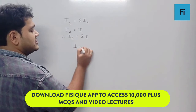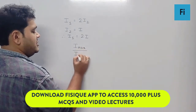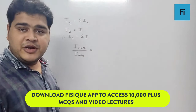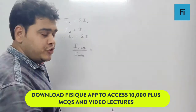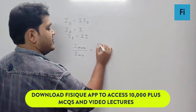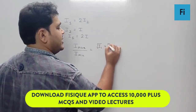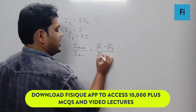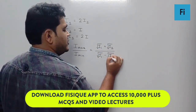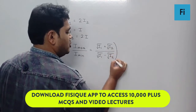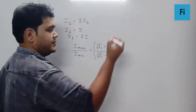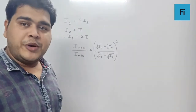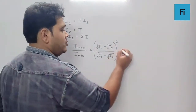They want us to find Imax upon Imin. The formula for this ratio is: (√I1 + √I2)² / (√I1 − √I2)². This formula is very important — you need to remember it.